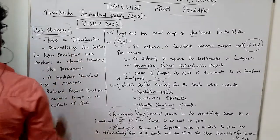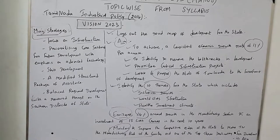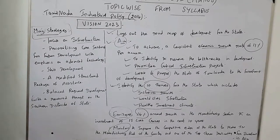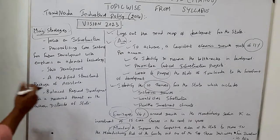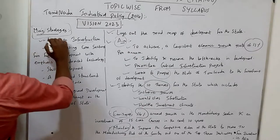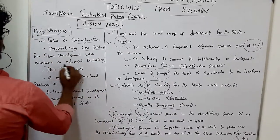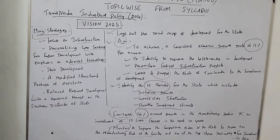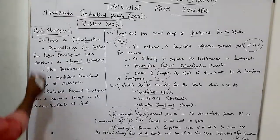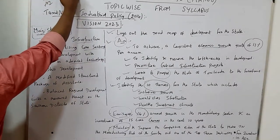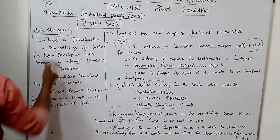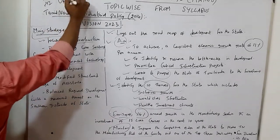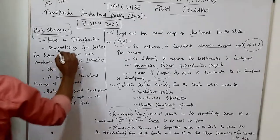One of the main strategies is to focus on infrastructure. Another strategy is prioritizing core sectors for future development with emphasis on advanced technology. Everyone is interested in technology including robotics, artificial intelligence, cryptography, and virtual reality — all of which have a very important role. This is a periodic core sector for future development.